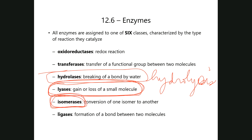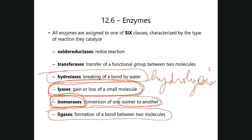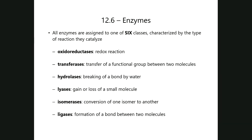An isomerase catalyzes the conversion between isomers — one isomer is converted to another. This is very common in metabolism; for example, in glycolysis you will see many isomerization reactions. Finally, a ligase catalyzes the formation of a bond between two molecules. Examples of all these types will be examined so you can start recognizing them.